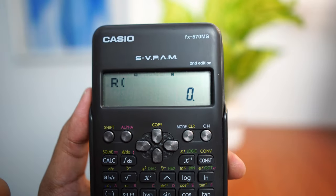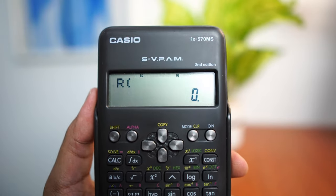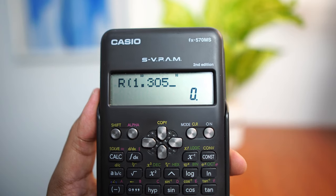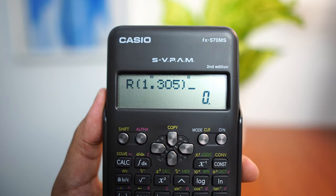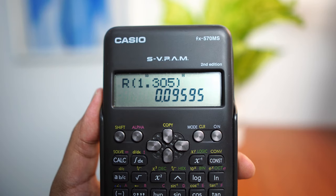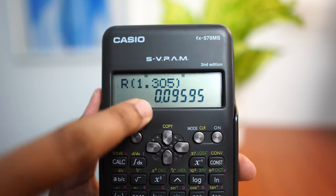Once we've gotten there, then you just have to key in your Z-score, which is 1.305. And you will get an answer of 0.09595. This is the probability of Z being greater than 1.305.